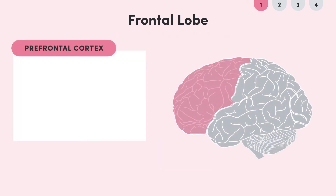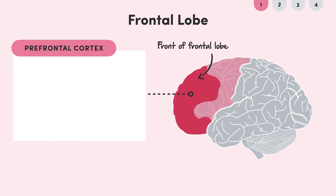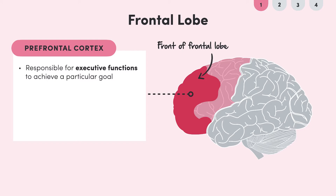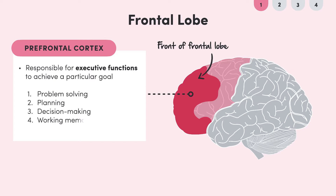The first is the prefrontal cortex, which is at the front of the frontal lobe. The prefrontal cortex is responsible for executive functions — things we do that help us achieve a particular goal. This includes problem solving, planning, decision making, working memory and self-control — all the things you need to do well at school.